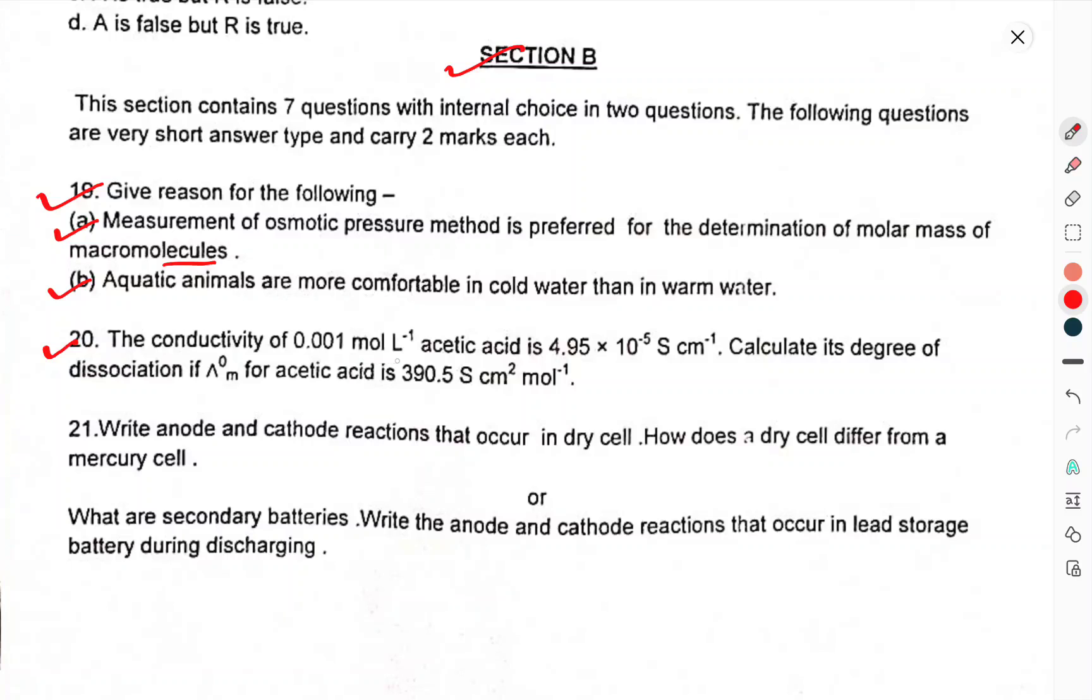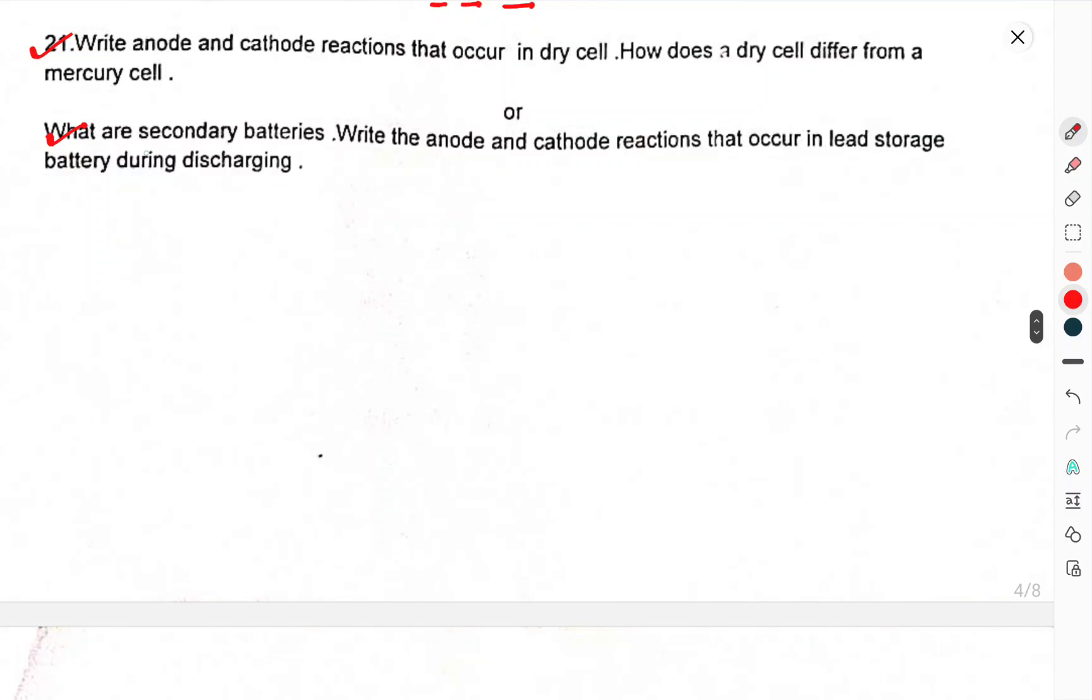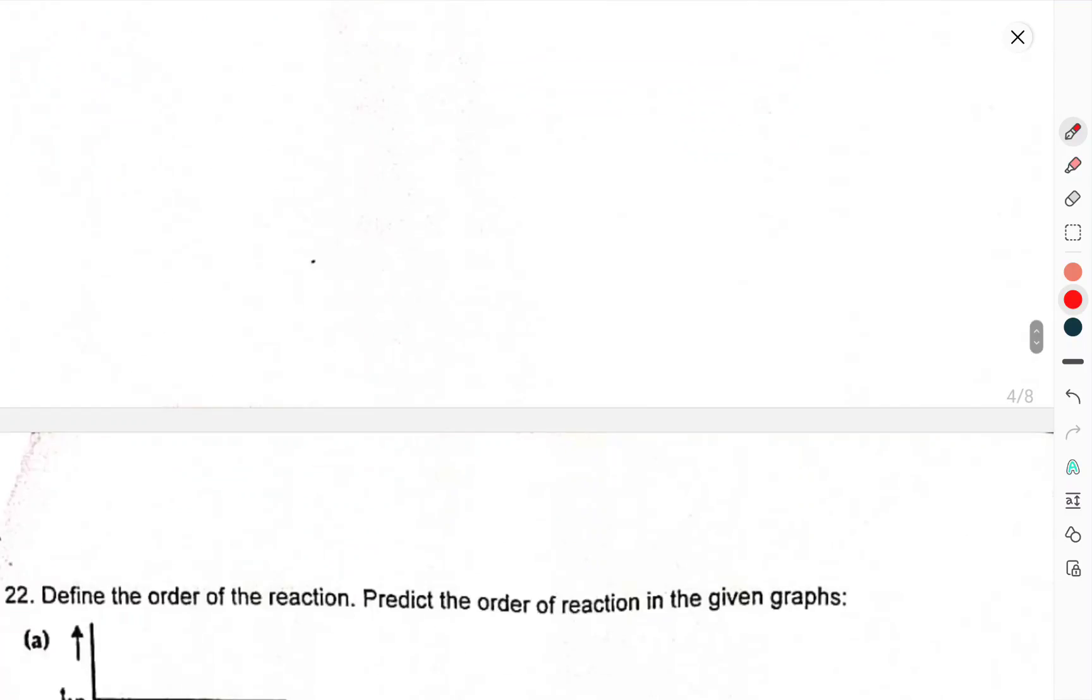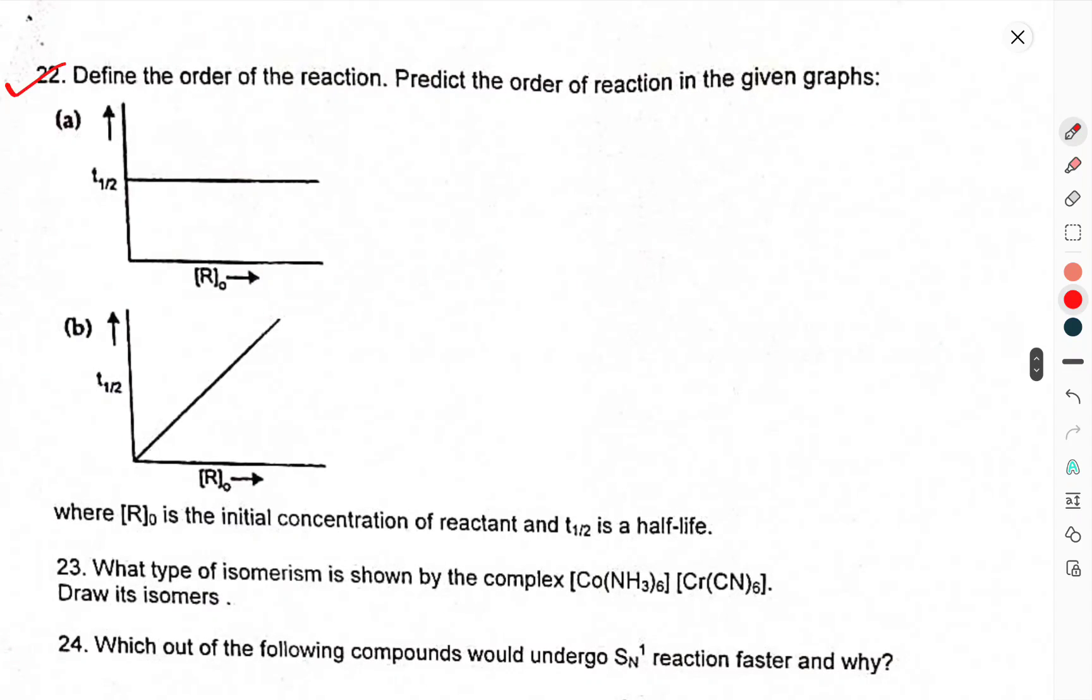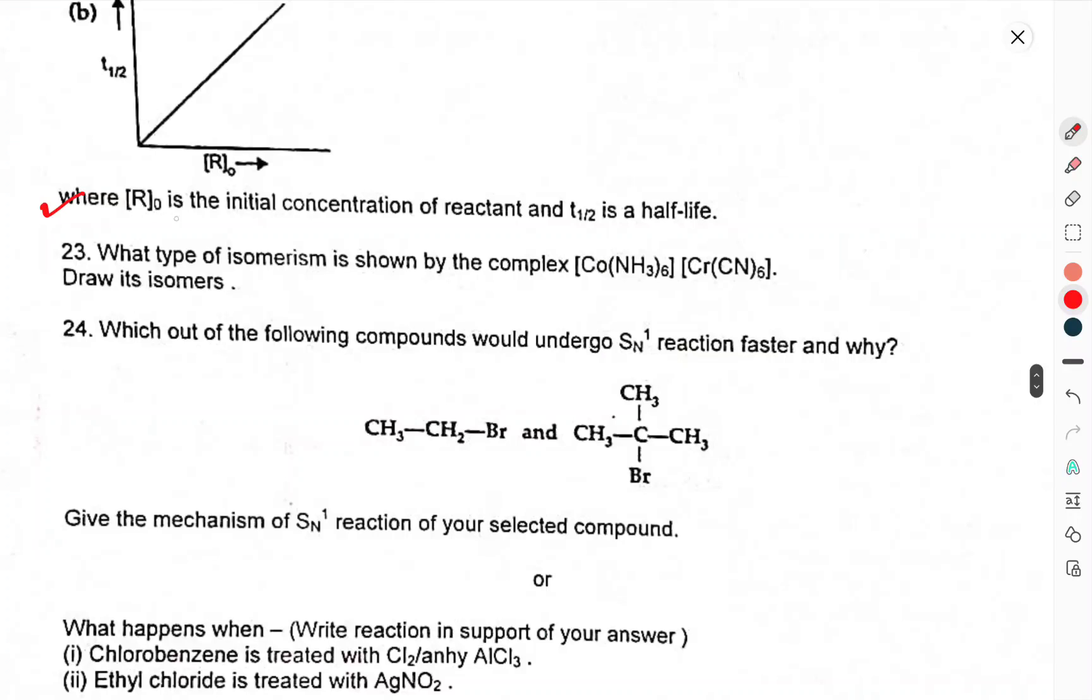Question 20: Conductivity of 0.001 M acetic acid is 4.95×10⁻⁵ S/cm. Calculate the degree of dissociation if molar conductivity at infinite dilution is 390.5 S·cm²/mol. Question 21: Write the anode and cathode reactions that occur in a dry cell. How does the dry cell differ from mercury cell? Or, What are secondary batteries? Write the anode and cathode reactions that occur in lead storage battery during discharging. Question 22: Define order of reaction. Predict the order of reaction from the given graphs where R₀ is initial concentration of reactant and T½ is half-life.